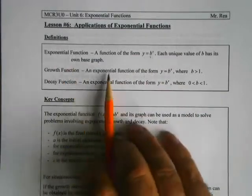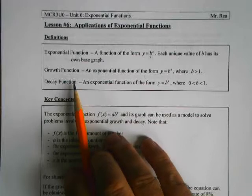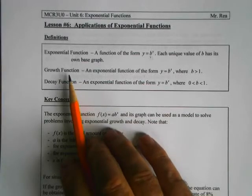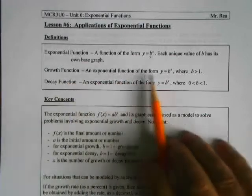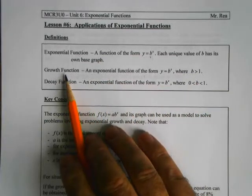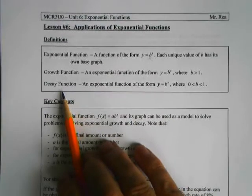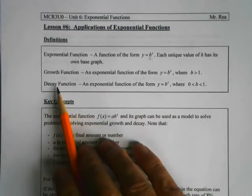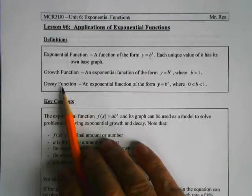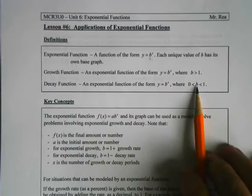Within those different bases, we break things down into two types of exponential functions. The first is the growth function, where the base value is greater than 1 — obviously by the name, it's getting bigger and bigger. The decay function is the opposite: as x gets bigger, the value of y gets smaller and smaller, and that happens when the base is between 0 and 1.